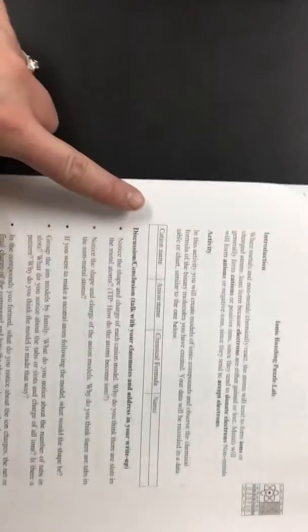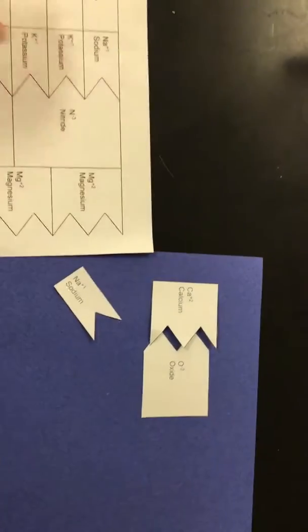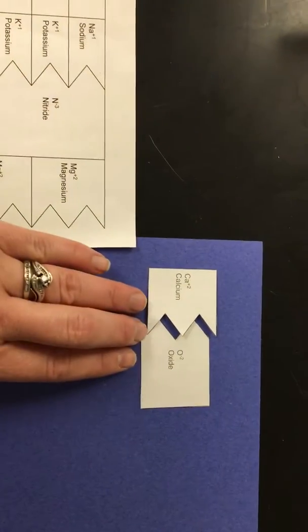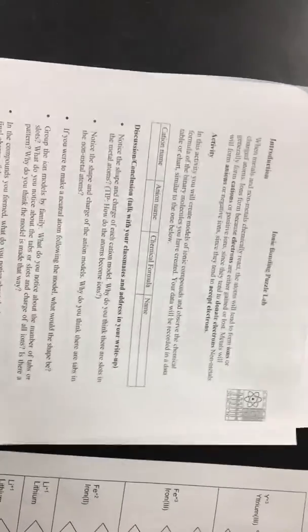I only need for your group to do one of these tables and one of these together. So you can work together to create 40 combinations that you tape on here and the table that you fill out here. Make sure everybody's names are on it.